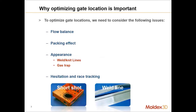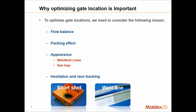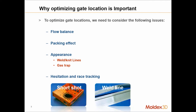First of all, why is gate location very important? Because during the molding process, we are trying to improve our flow balance. If flow is not balanced, when we start to pack the part, the packing pressure won't be uniform. And once the packing pressure is not uniform, some areas will pack more, some will pack less. This causes material shrinkage to be non-uniform, which is why the part starts to warp.